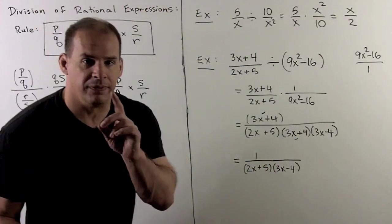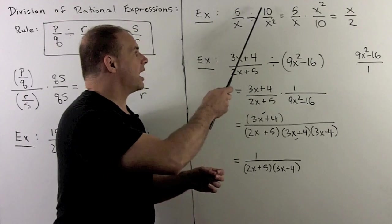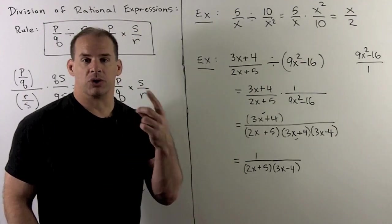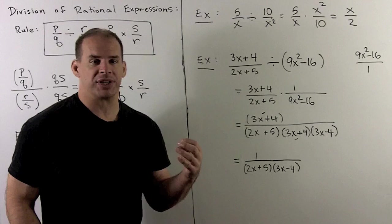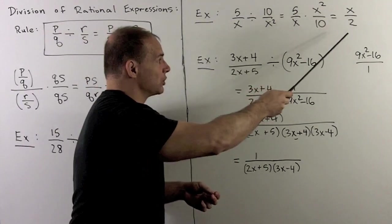We move up to a variable. So I'll take 5 over x divided by 10 over x squared. Reciprocal of 10 over x squared is x squared over 10. We multiply, we cancel, and I get x over 2.